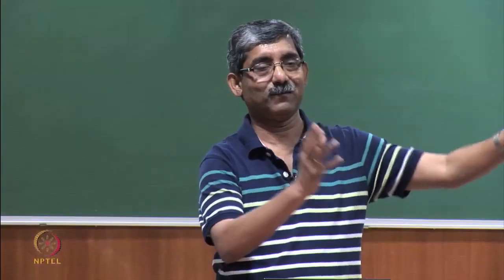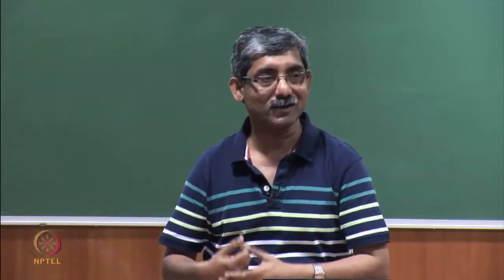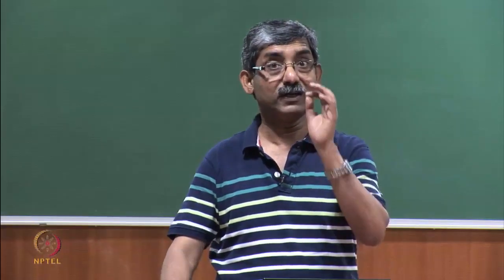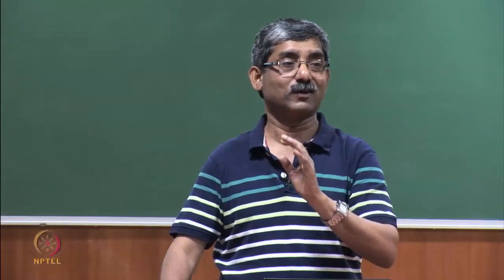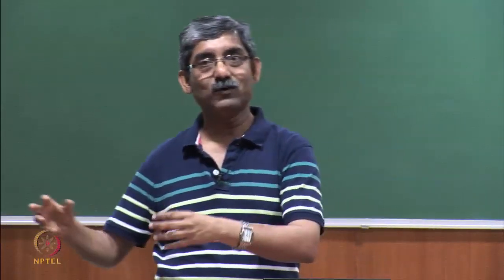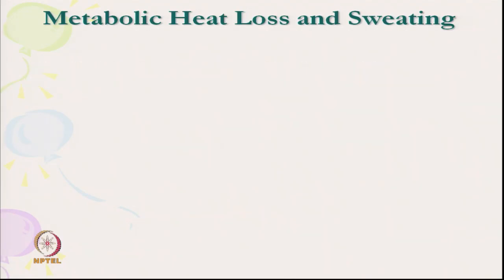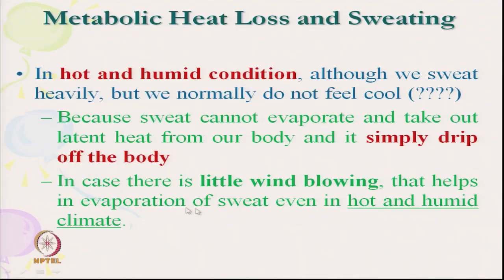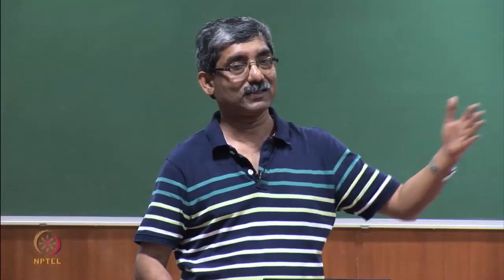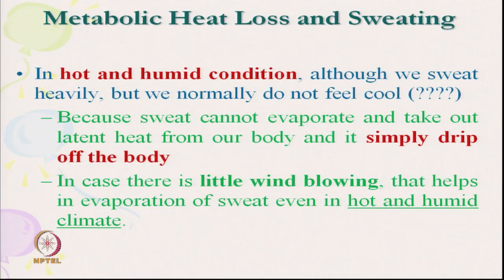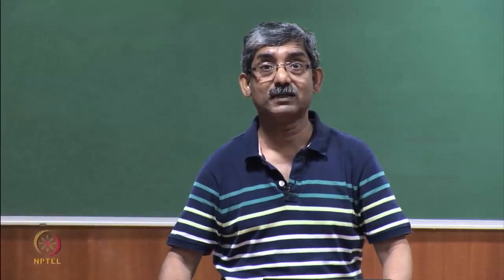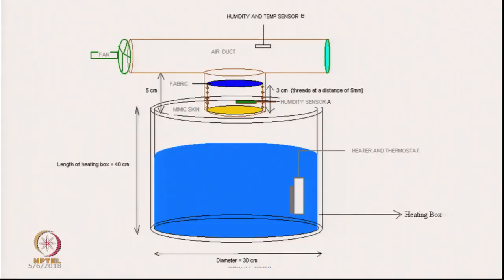Wind blowing takes away heat in the form of latent heat of evaporation. An instrument was developed to study microclimate temperature and humidity at different levels of air velocity. The chamber is partially filled with water with a heater to maintain temperature, controlled by a thermostat, which generates humidity through evaporation. A yellow-colored mimic scheme simulates human skin with micro pores, and a blue-colored fabric sample is placed above it.